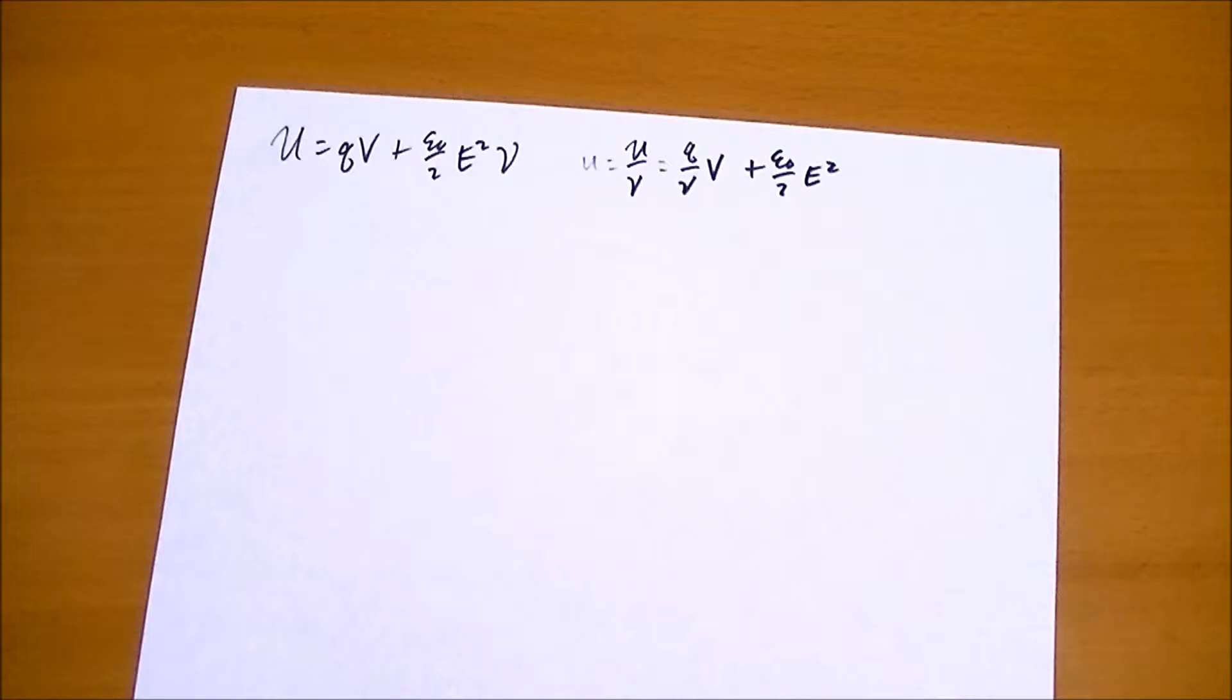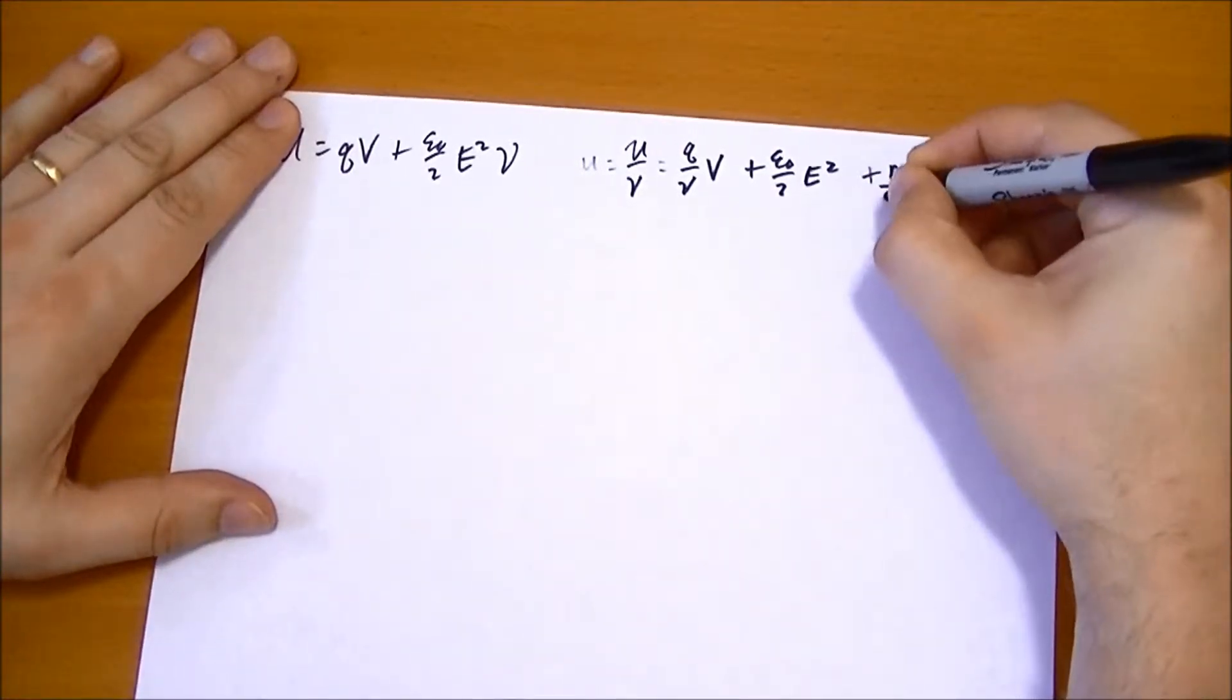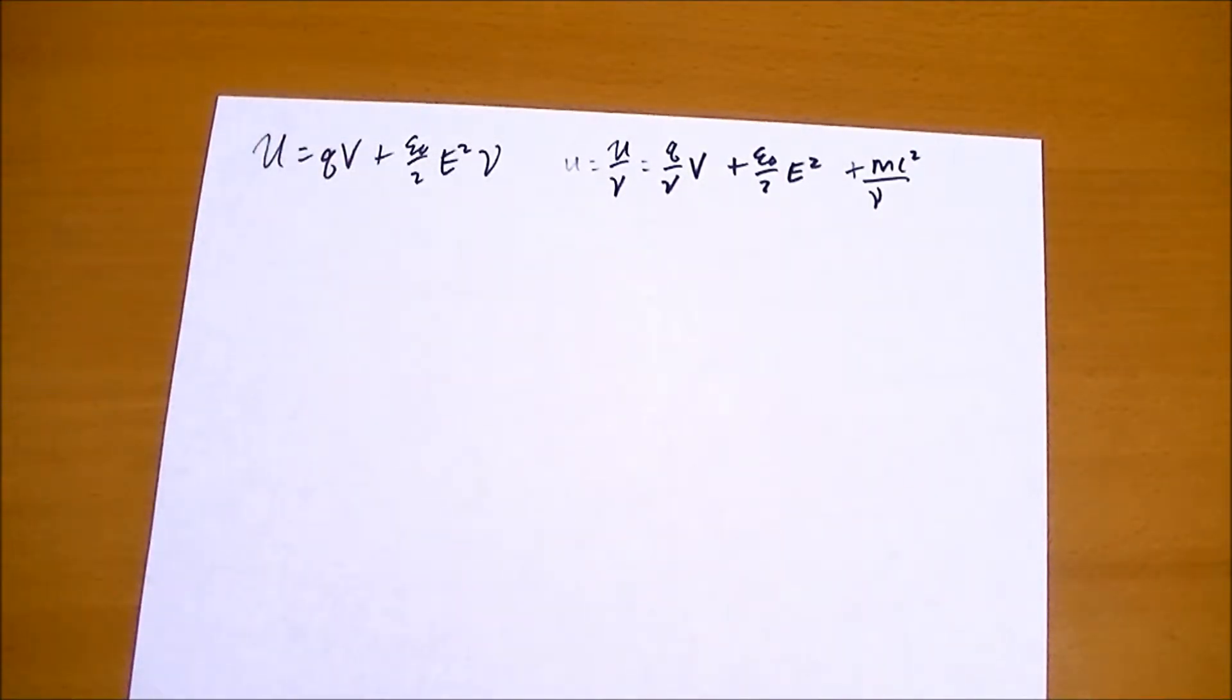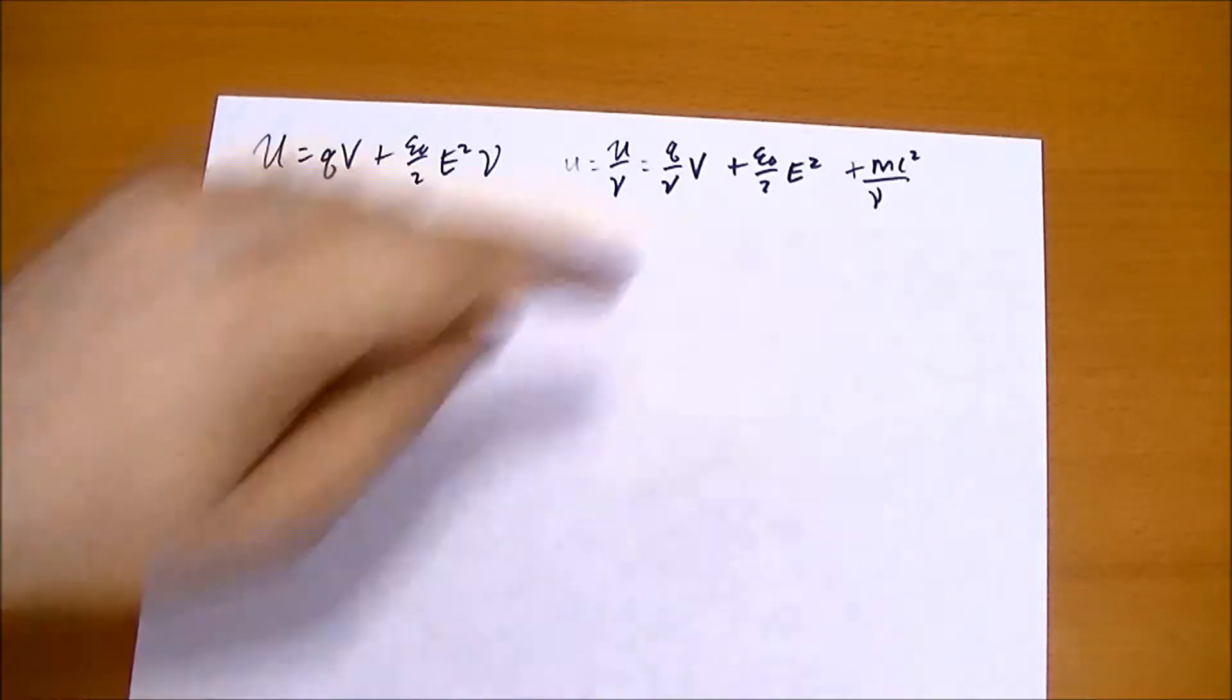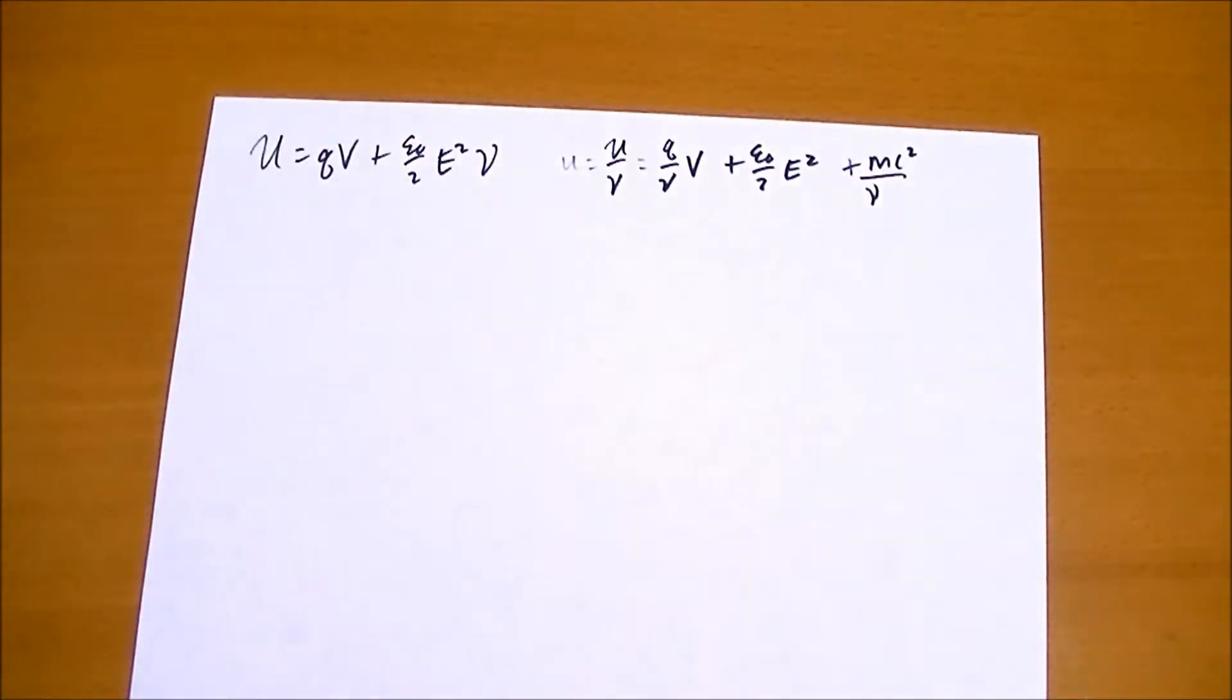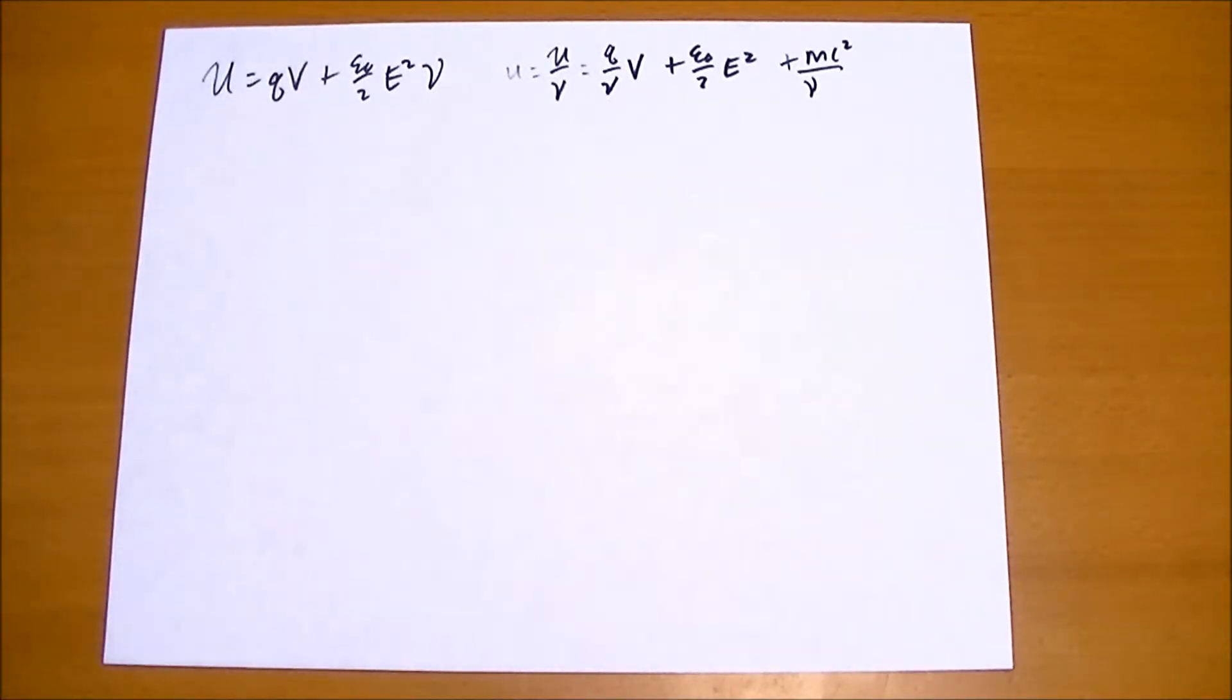But when we go to add in the additional energy caused by the mass, or rather the mass density at a point, Einstein gave us e equals mc squared. This additional energy doesn't follow the same model that gravity, magnetism, and electricity follow. So we're going to introduce a new field, hopefully it'll give us this term, and if the math works out, this should describe the way the universe really works with mass.